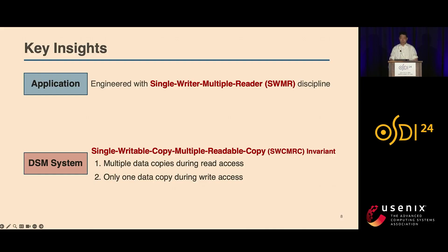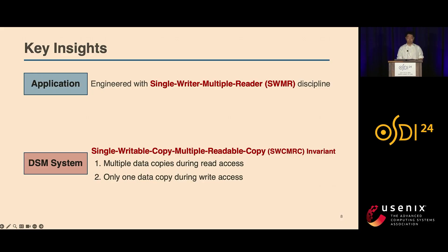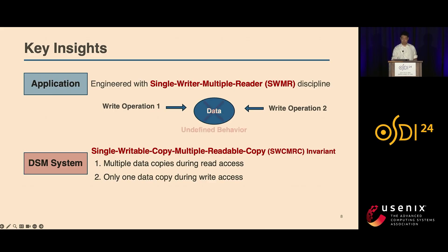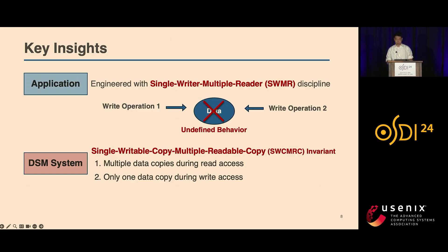Multi-threaded concurrent applications inherently follow a single-writer, multiple-reader model. At any time, a data object is either written by one thread or read by multiple threads. This pattern is important to the application's own correctness, because concurrent writes by multiple threads could lead to undefined behaviors, so the application must use some methods to serialize accesses to the data — maybe through locks, conditional variables, or something else. You can see the application and the system are trying to maintain some similar properties, and this similarity gives us a unique opportunity to better solve the coherence problem.